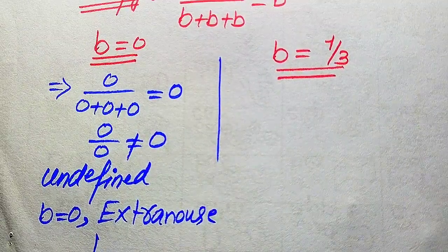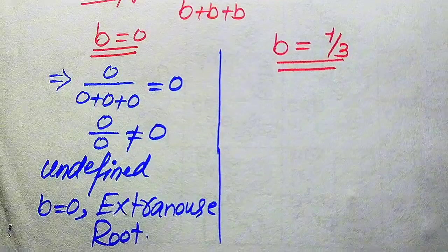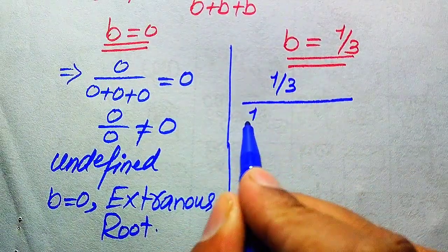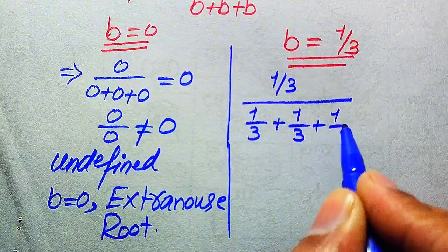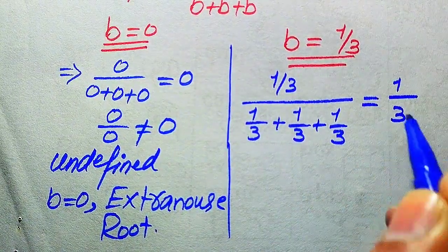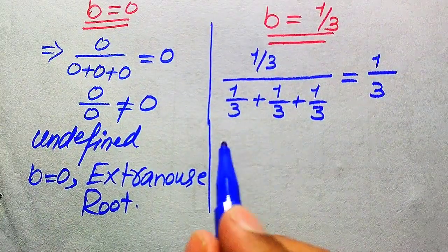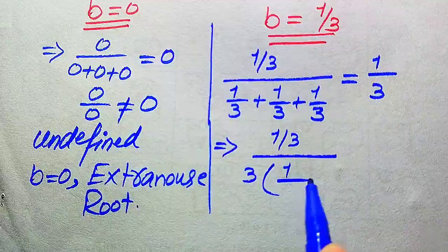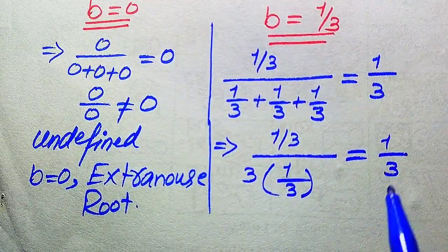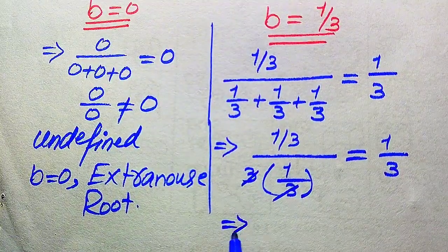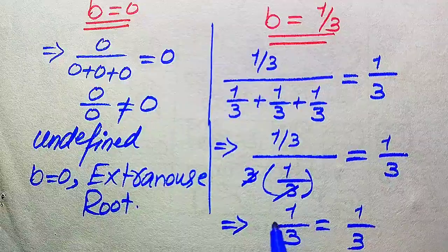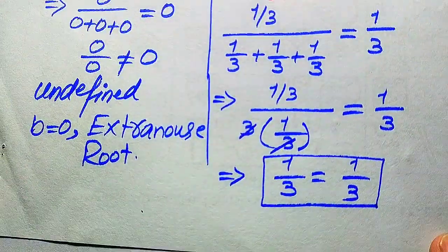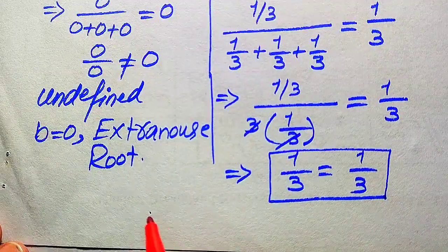Since b equals zero does not satisfy the given equation, it is an extraneous root — it does not satisfy the given question statement. When we put b equals 1 over 3 on both sides, it becomes 1 over 3 divided by (1 over 3 plus 1 over 3 plus 1 over 3) equals 1 over 3. Focusing on the denominator, that is 3 times 1 over 3, the 3s cancel, and we get 1 over 3 equals 1 over 3. Both sides are equal.